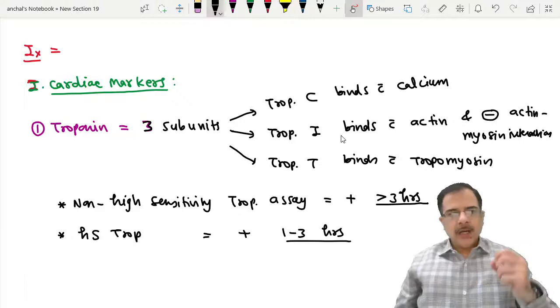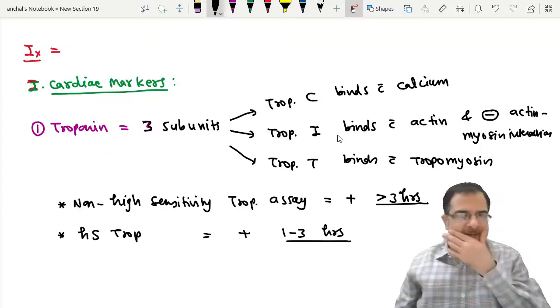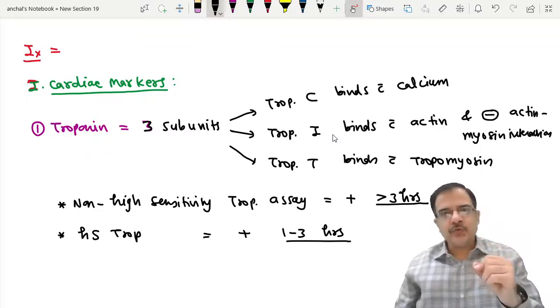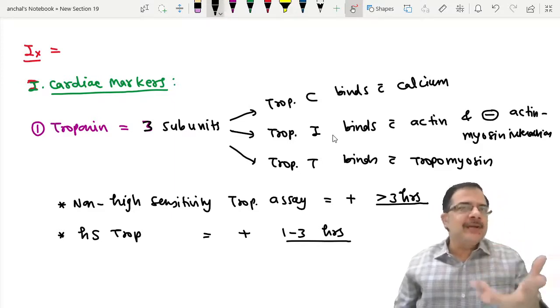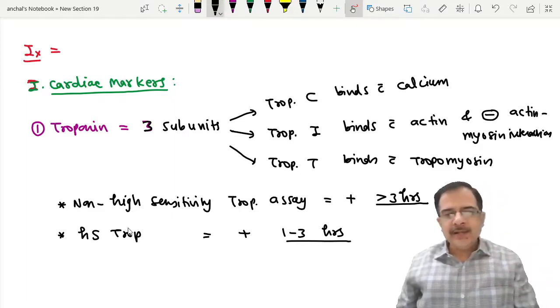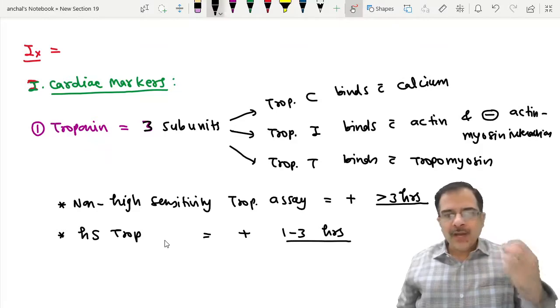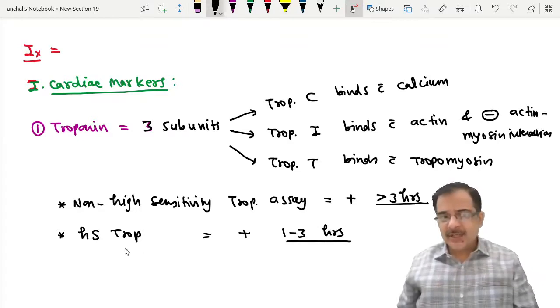Highly sensitive troponin can be present in a healthy individual also, so it can produce a false positive test. If they are negative, they have a negative predictive value. If negative, then MI diagnosis is unlikely. They detect MI within one to three hours, but the disadvantage is HS troponin can be falsely positive.